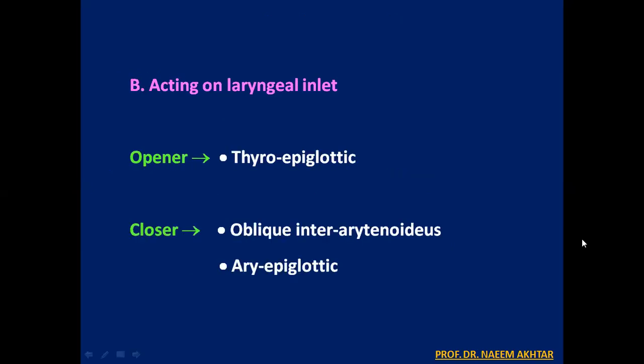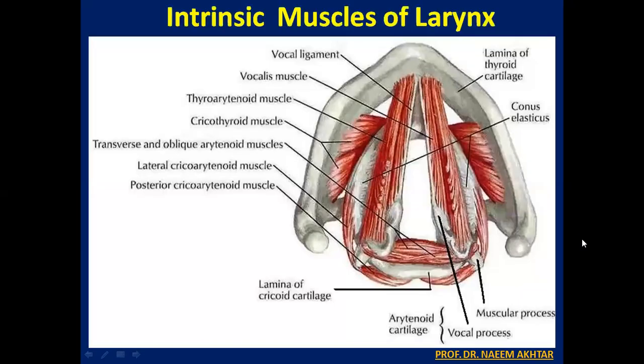The muscles acting on the laryngeal inlet produce opening and closing of the laryngeal inlet. The opener is the thyroepiglottic muscle, whereas the closers are the oblique interarytenoid and aryepiglottic muscles.